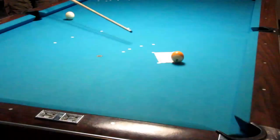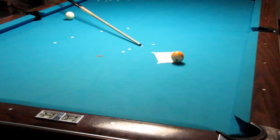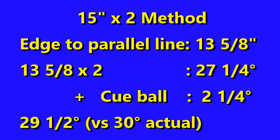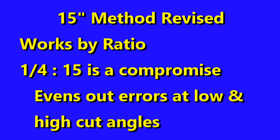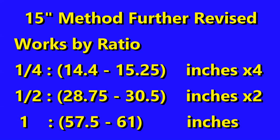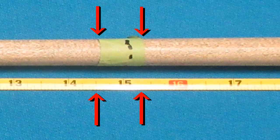On my cue stick it's easy — the joint collar is at 30 inches. Getting 15 inches closer makes the parallel line easier to estimate. Here are the numbers: the measurement is 13 and 5/8 inches, and you multiply by 2 now instead of by 4. Add the cue ball offset, which is half of what we've done before. Also, 15 inches is a compromise number picked to even out errors at low and high cut angles. We can improve accuracy by using 14.5 inches for most angles and 15.25 inches for angles over 60 degrees. Additional marks on your cue stick can help with this.